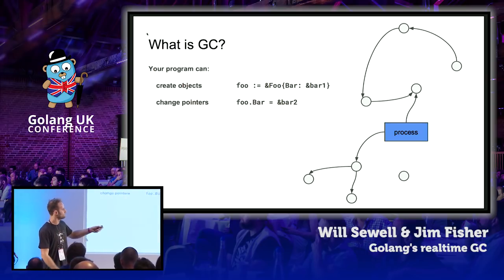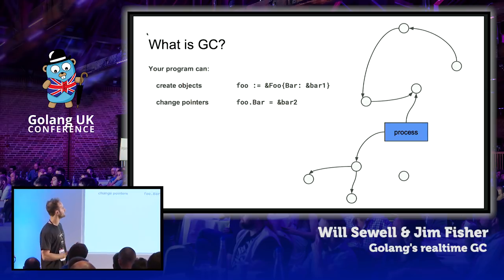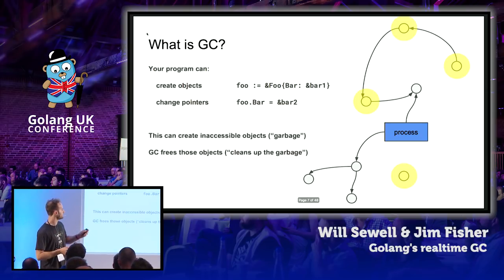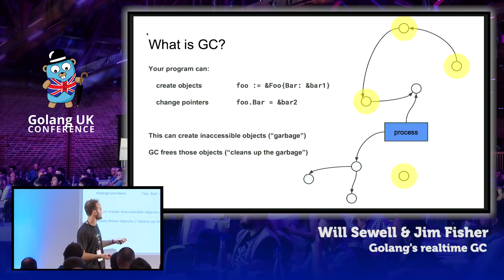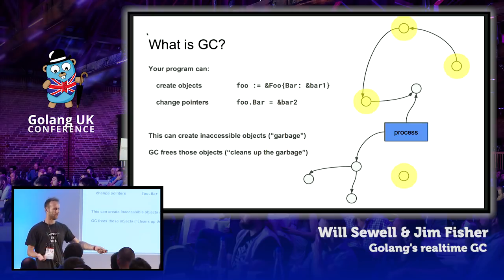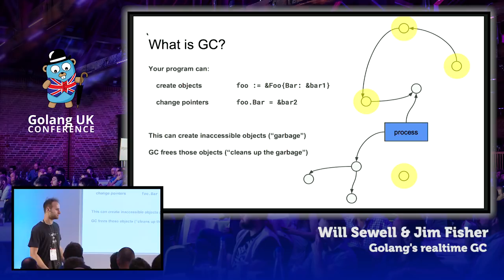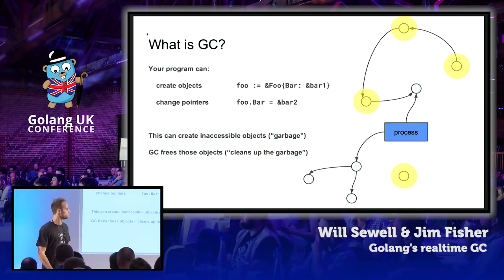What you're doing there is creating something which looks like this — you have your process, which has some references to objects, and those objects have references to other objects. These circles, which I'll use throughout to explain this algorithm, are objects, and the arrows between those are pointers. By creating this graph of objects, you create ones which the process can't actually see anymore — it can't find those via any chain of pointers.